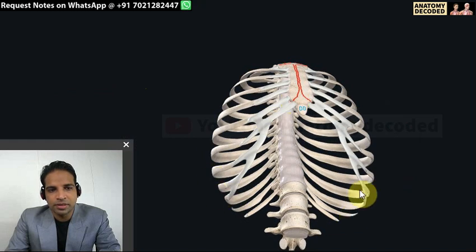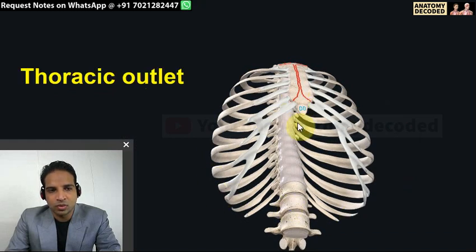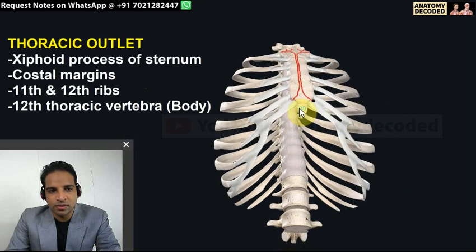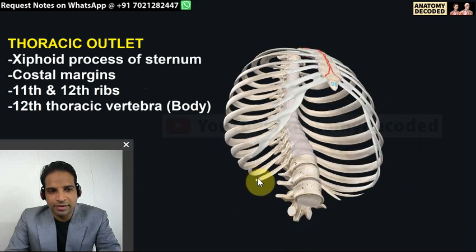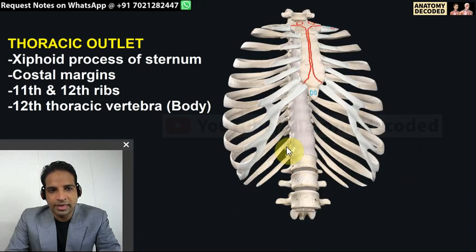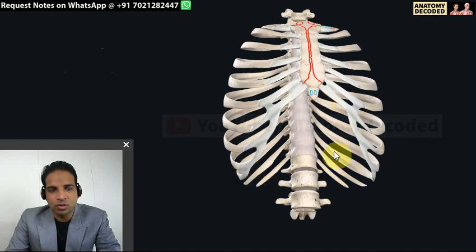The lower aperture of the thoracic cage is the thoracic outlet. It is bounded on the anterior aspect by the xiphoid process of the sternum, then the costal cartilages, then the 11th and 12th ribs - which form the costal margin - and the anterior border of the 12th thoracic vertebra.